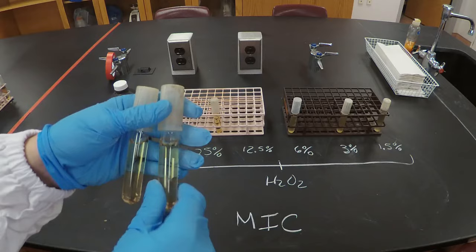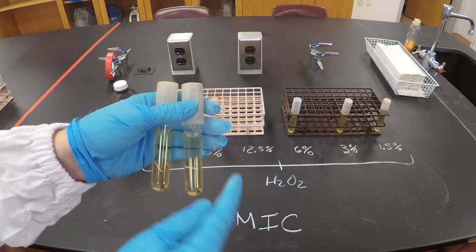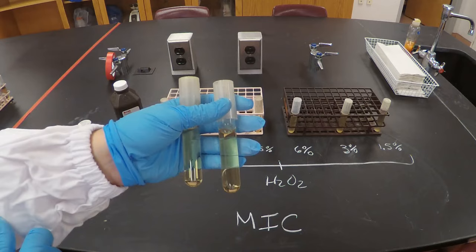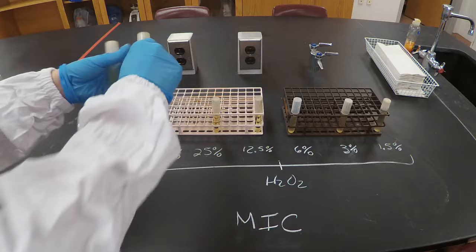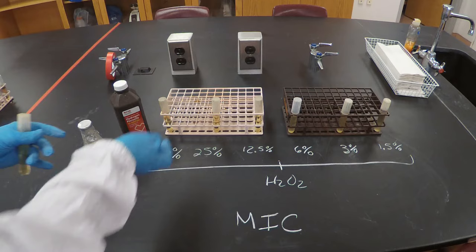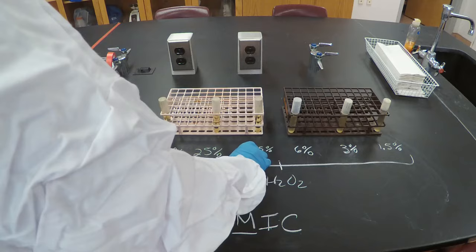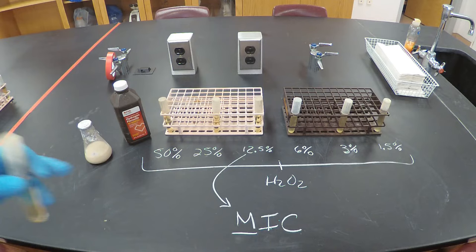At 12.5%, it looks as clear as the negative control — so 12.5% is inhibiting the growth of the bacteria. Did 25% hydrogen peroxide work? Yes — it looks as clear as the negative control. Did 50% work? Yes, also clear. But remember, we're looking for the minimum, so the minimal inhibitory concentration here is 12.5% hydrogen peroxide.